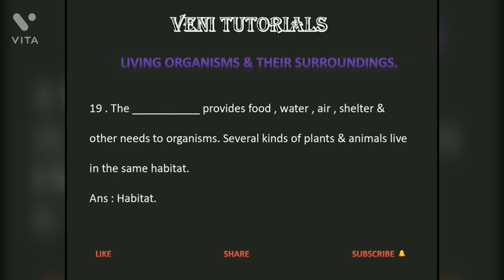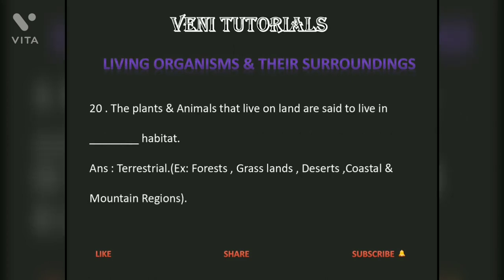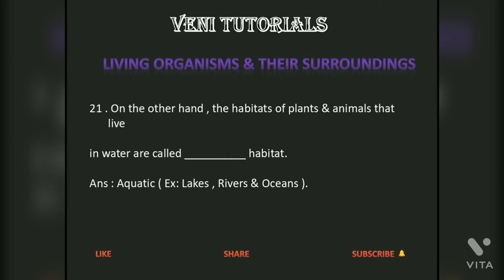The habitat provides food, water, air, shelter, and other needs to organisms. Several kinds of plants and animals live in the same habitat. Answer: Habitat. The plants and animals that live on land are said to live in a terrestrial habitat. Examples include grasslands, deserts, coastal, and mountain regions. On the other hand, the habitats of plants and animals that live in water are called aquatic habitats. Examples: lakes, rivers, and oceans.